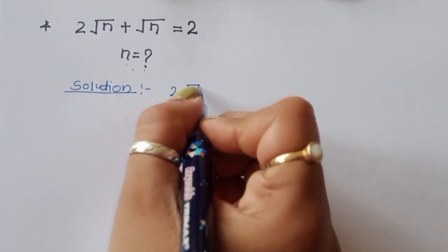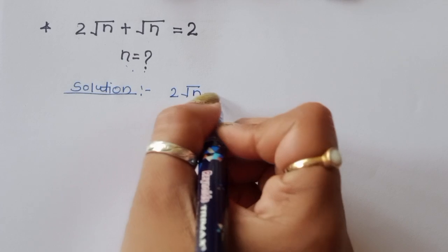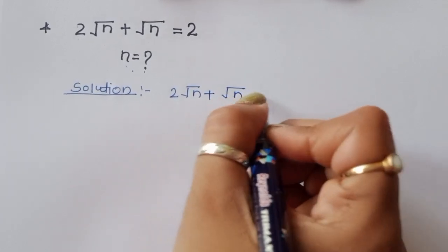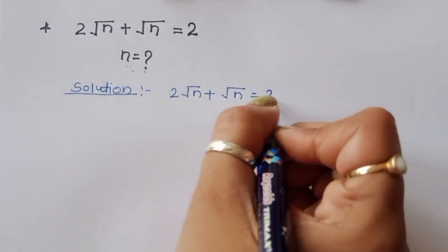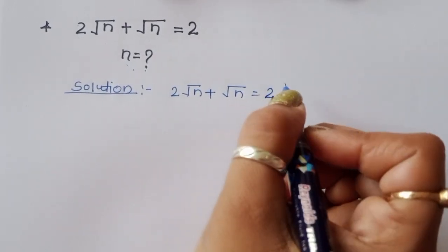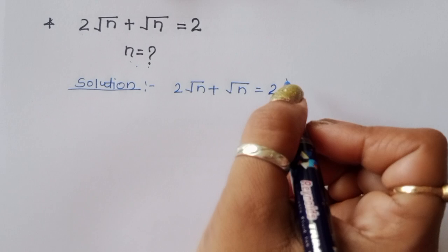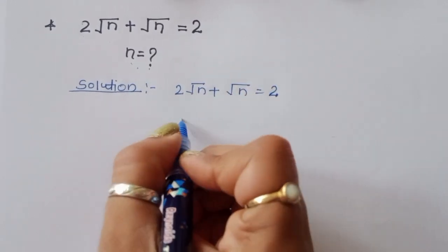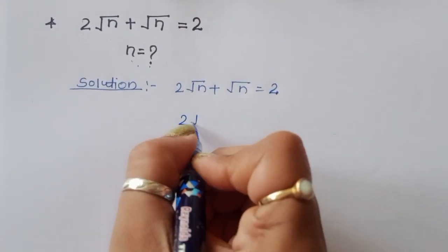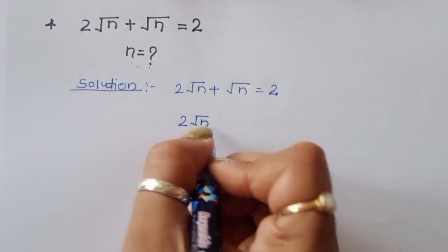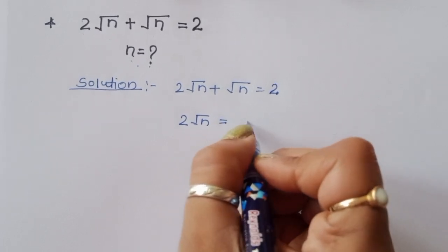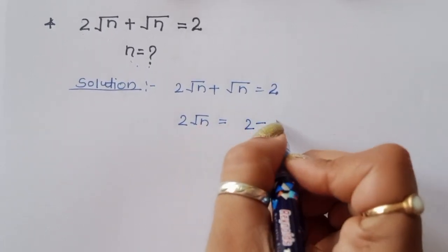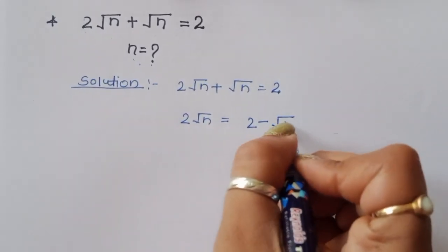2 square root of n plus square root of n is equal to 2 — this is the given question. So we can write this as: 2 square root of n is equal to 2 minus square root of n.